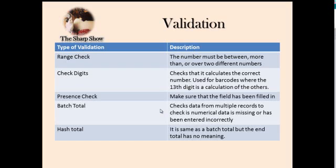Now validation checks — you have to learn these. A range check is when a value must be between two numbers. For example, this could be used in a date. If shown a number with a mistake, you might be asked what validation check could have been used. A range check is mainly used for months, as the value must be between 1 and 31.